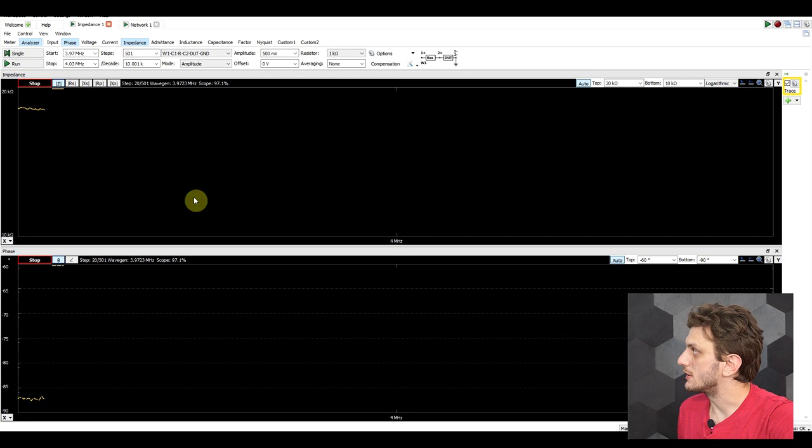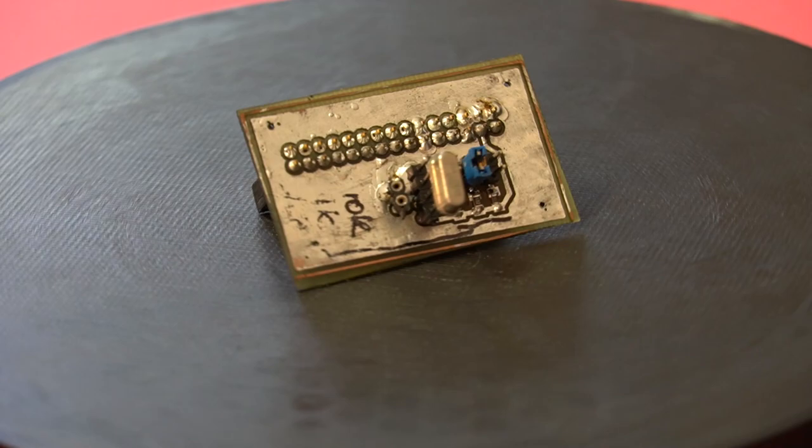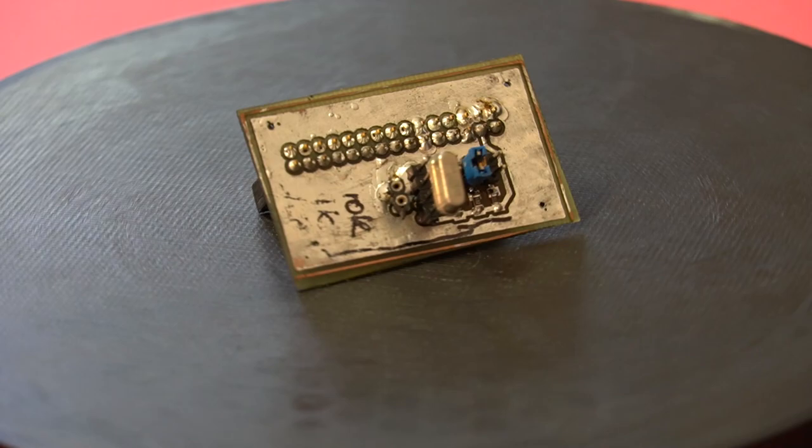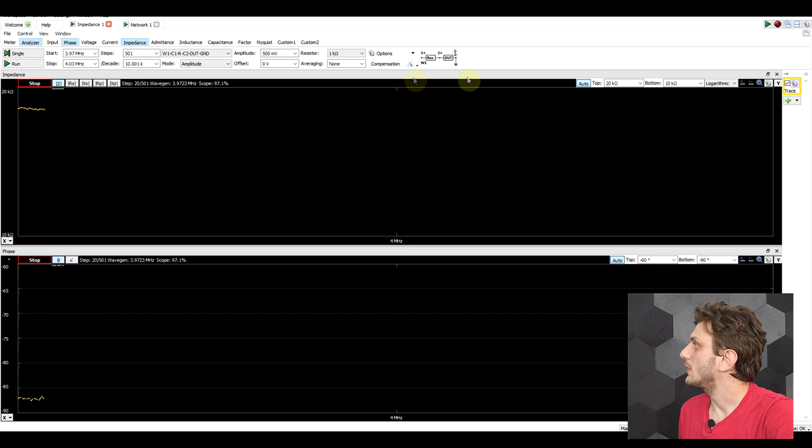So to perform the measurement, the basic tool that you need is a network analyzer. And you can use a fancy one or you can use a basic one like the analog discovery tool. And I will be setting it into impedance mode. And to connect the quartz crystal to the analog discovery, I built a small adapter board that connects the quartz crystal to a known value resistor and to the oscilloscope channels and the first waveform generator. So the exact setup is the one described in the setting of the impedance measurement.